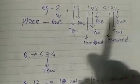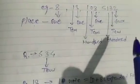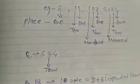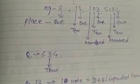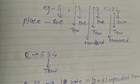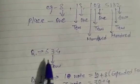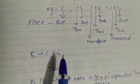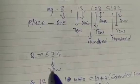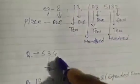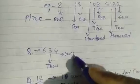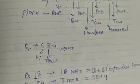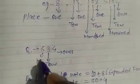Now I want to show the place values of a number. I am taking the number 534, where 4 is in the ones place, 3 is in the tens place, and 5 is in the hundreds place.